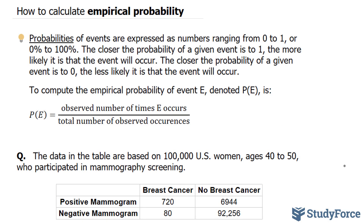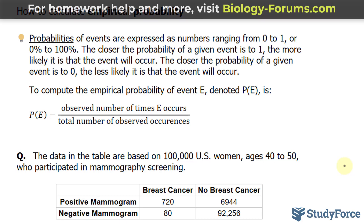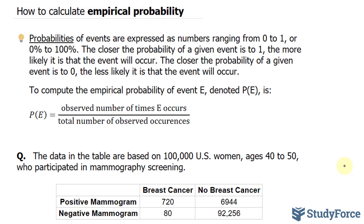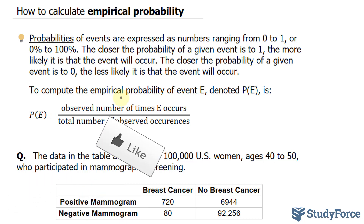In this lesson, I'll show you how to calculate empirical probability. Probabilities of events are expressed as numbers ranging from 0 to 1, or 0% to 100%. The closer the probability of a given event is to 1, the more likely it is to occur. The closer it is to 0, the less likely it is to occur. To compute the empirical probability of an event E, denoted P(E), you take the observed number of times E occurs over the total number of observed occurrences.